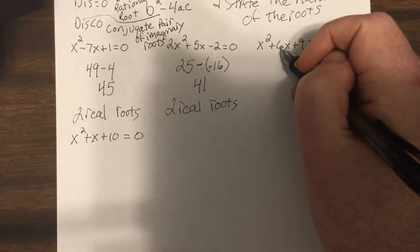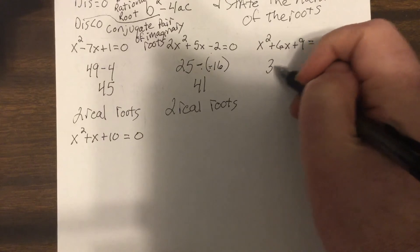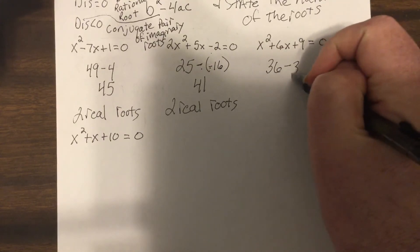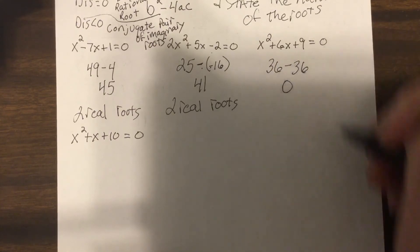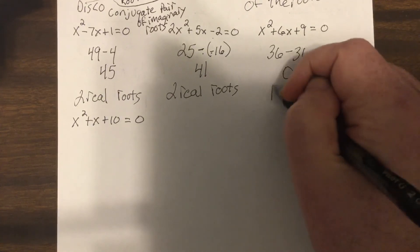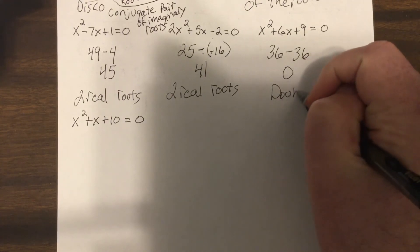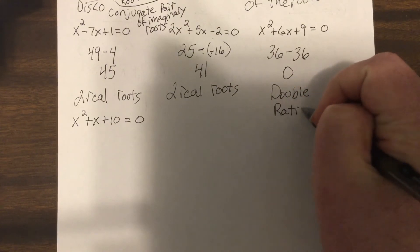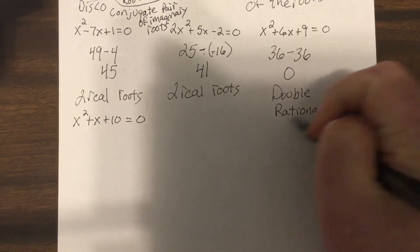Now here, b is 6, so b squared is 36, minus 4 times 1 times 9 is 36, so it's 0. So that would be a double rational root.